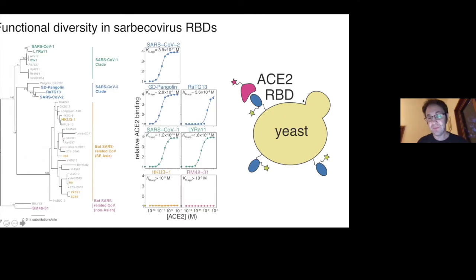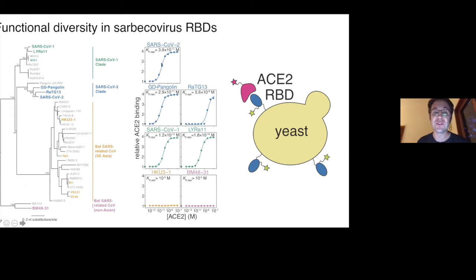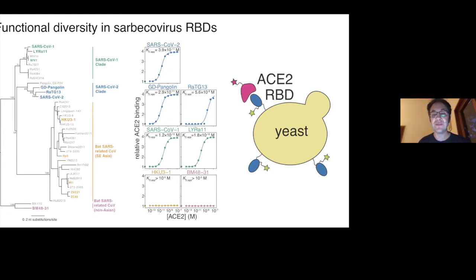We can put different receptor binding domains on yeast and do this experiment with lots of different RBDs. For instance, SARS-CoV-2 binds to ACE2 really well, SARS-CoV-1 also binds quite well, the pangolin receptor binding domain actually binds to ACE2 even better than SARS-CoV-2, and then various bat isolates bind more weakly or not at all. You could clone lots of different receptor binding domains into yeast and generate hundreds of binding curves.